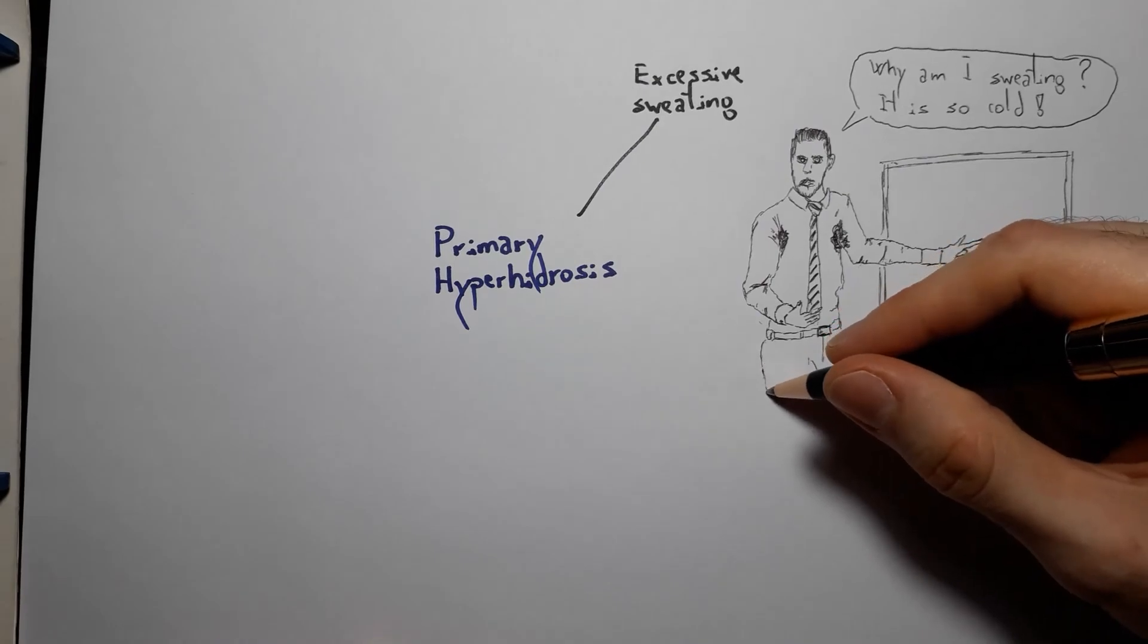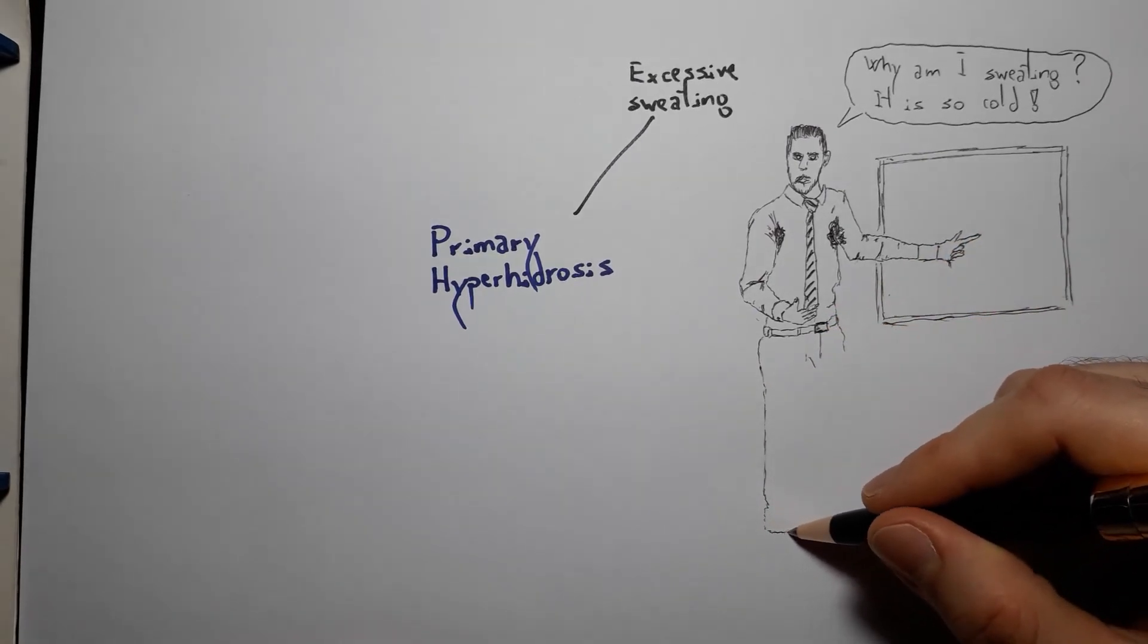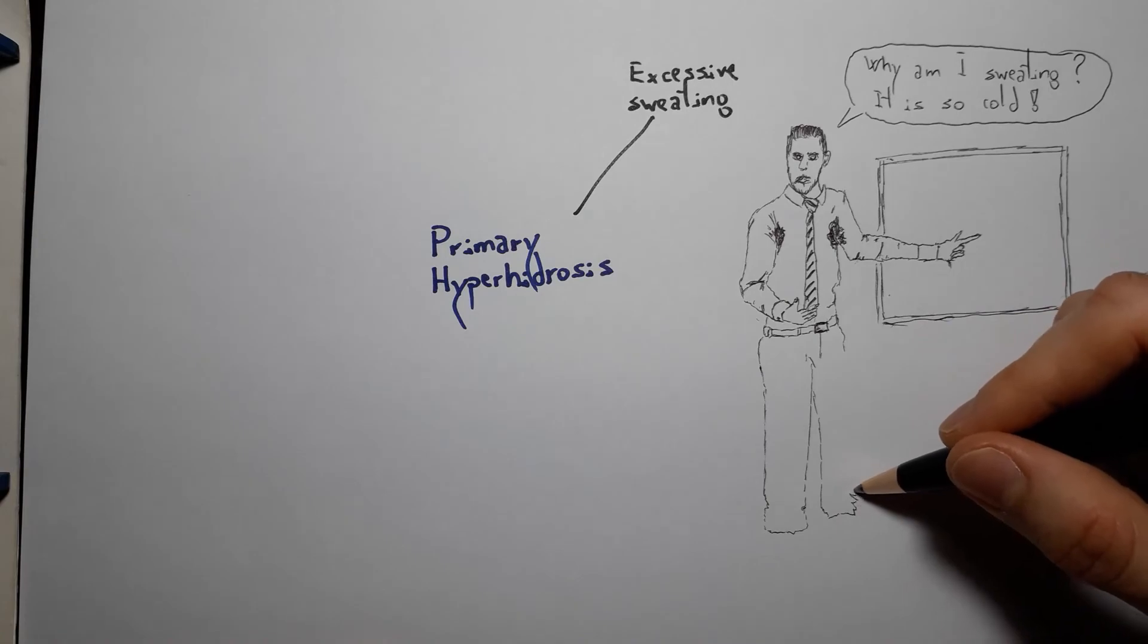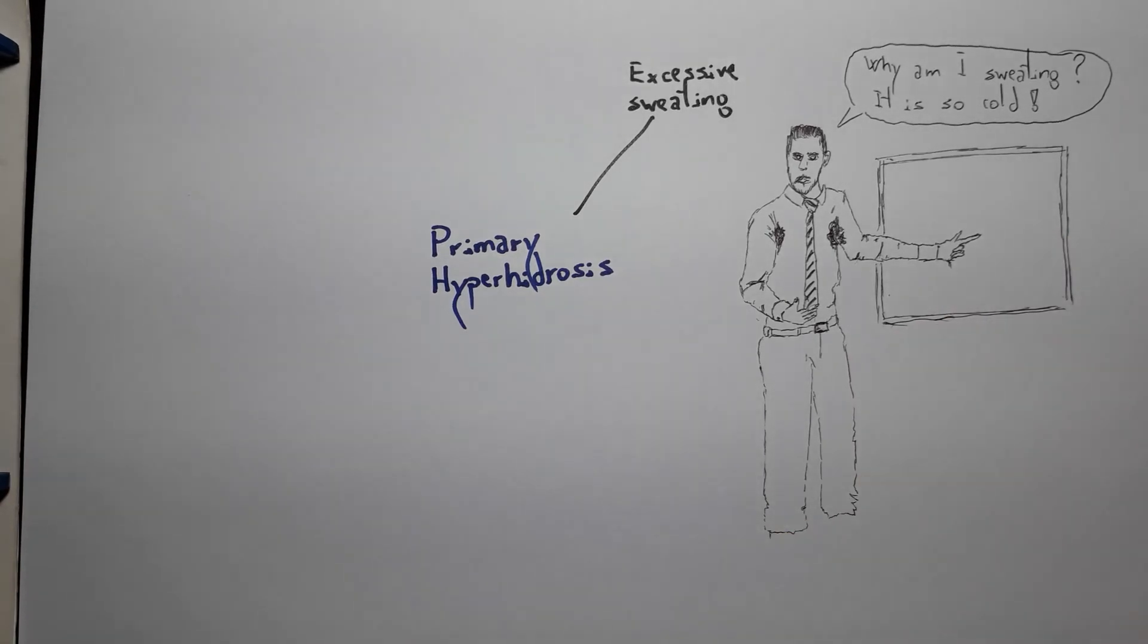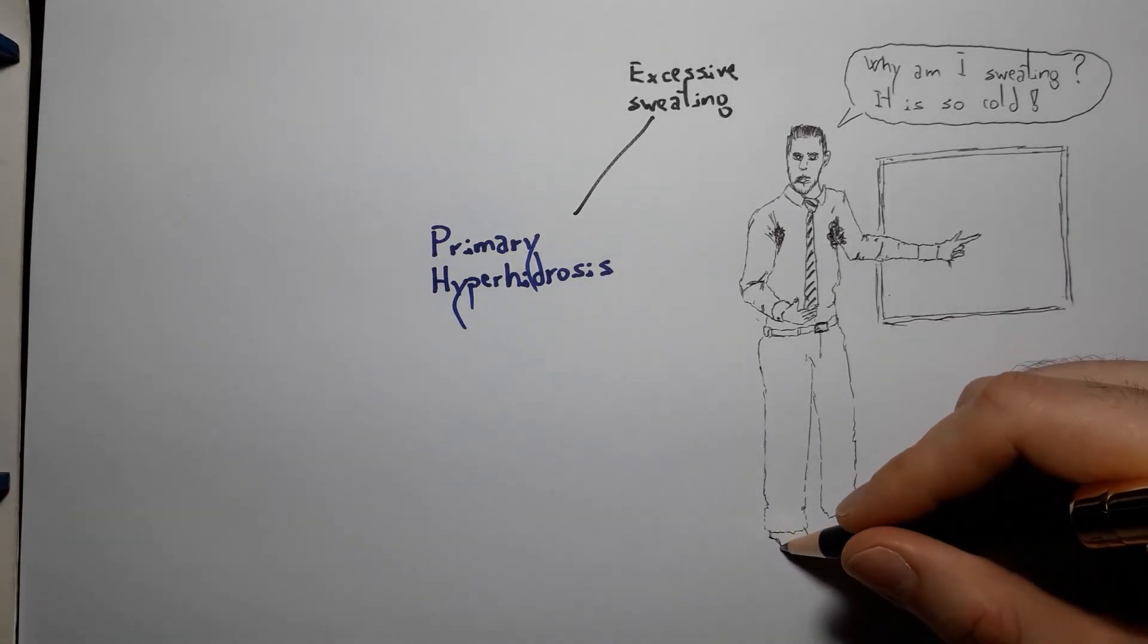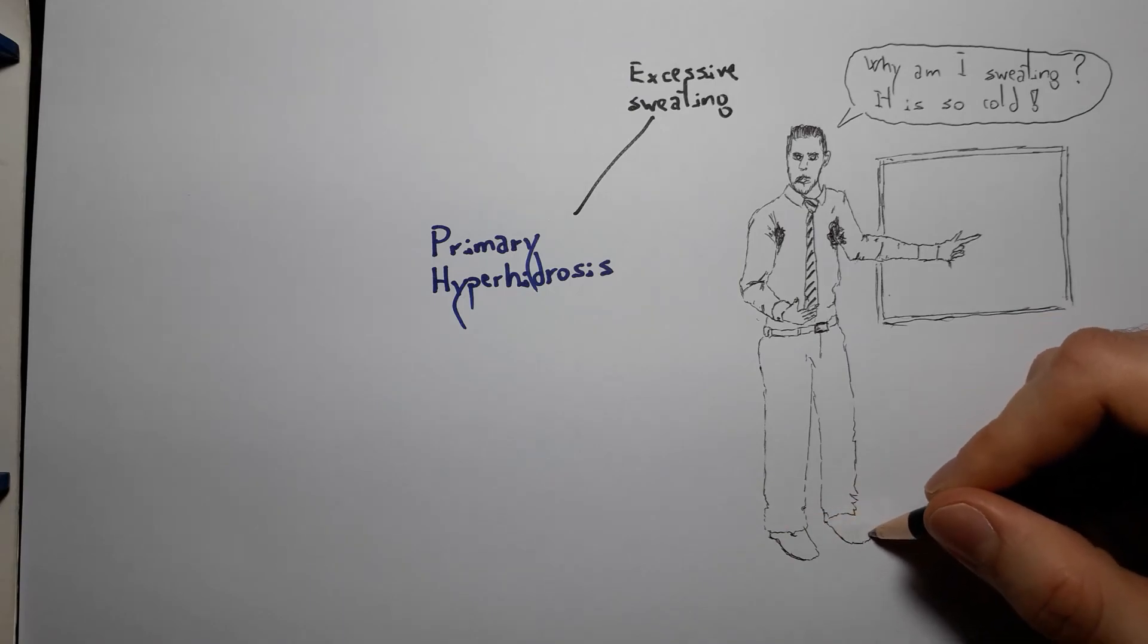Hyperthyroidism, pheochromocytoma, chronic infections, lymphomas, eccrine hematomas, carcinoid syndrome, tuberculosis, AIDS, endocarditis, drugs such as antidepressants, oral hypoglycemics, triptans, antipyretics, cholinergics, and sympathomimetics.